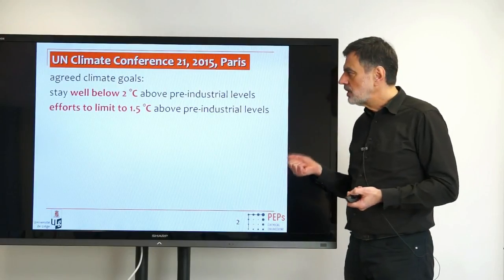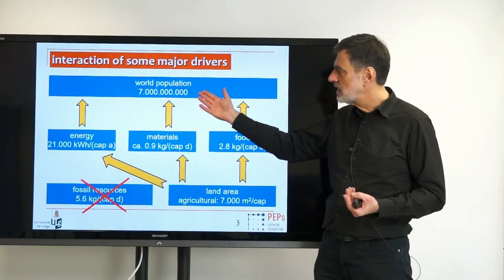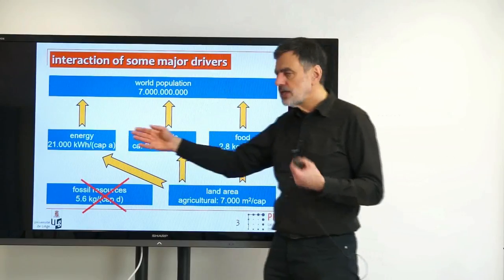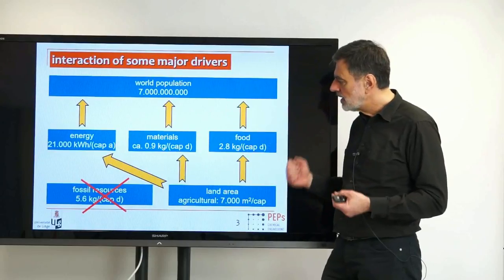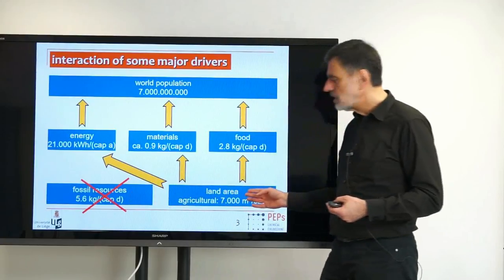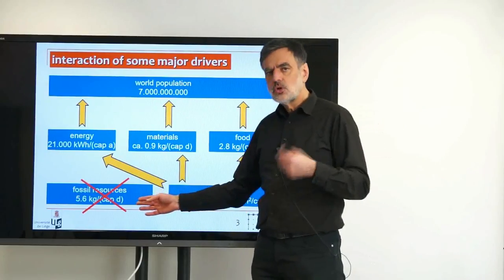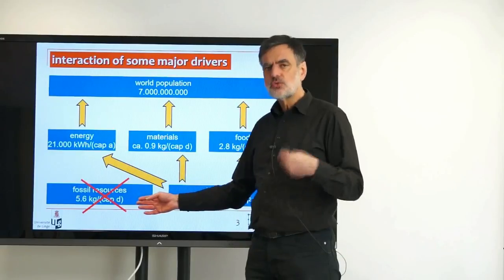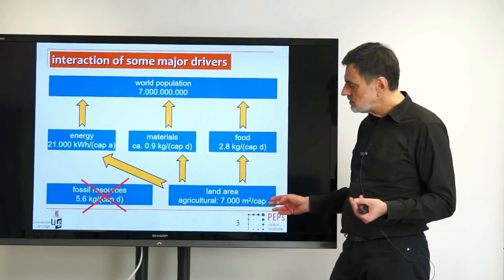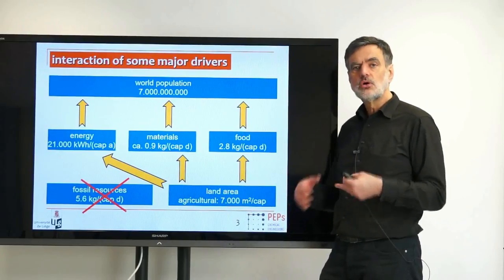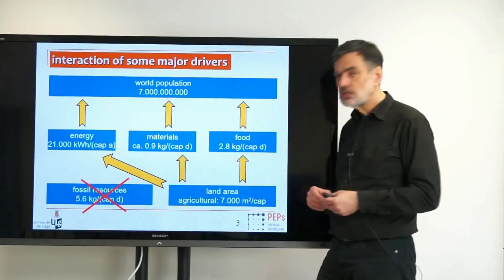What do I have to take into account? It's actually not that much. I have to consider the world population — around 7 billion today, continually increasing — which has certain demands for energy, materials, and food. These demands are supplied today from fossil resources as well as from agricultural land area. If we want to eliminate fossil resources, which produce CO₂ and drive climate change, we have to produce everything from land area in the future — including deserts for solar energy collection.